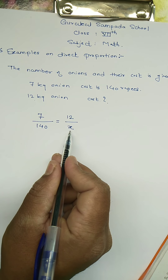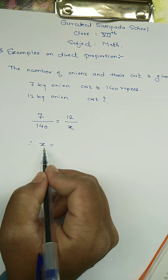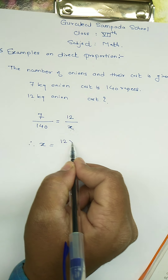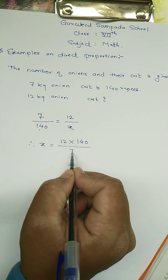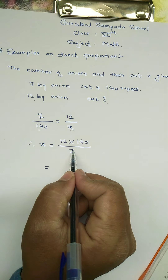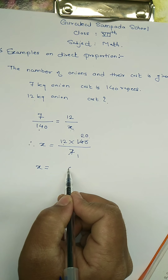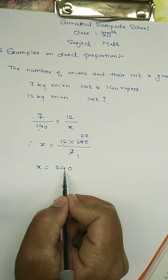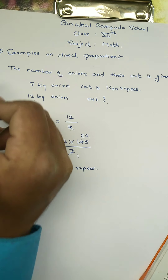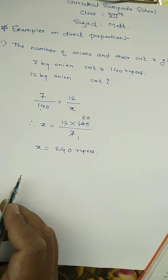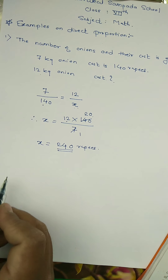We want to find the value of x. Rearranging: x equals 12 multiplied by 140 divided by 7. Calculating: 140 divided by 7 is 20, and 12 multiplied by 20 gives x equal to 240 rupees. So for 12 kg of onions, the cost will be 240 rupees.